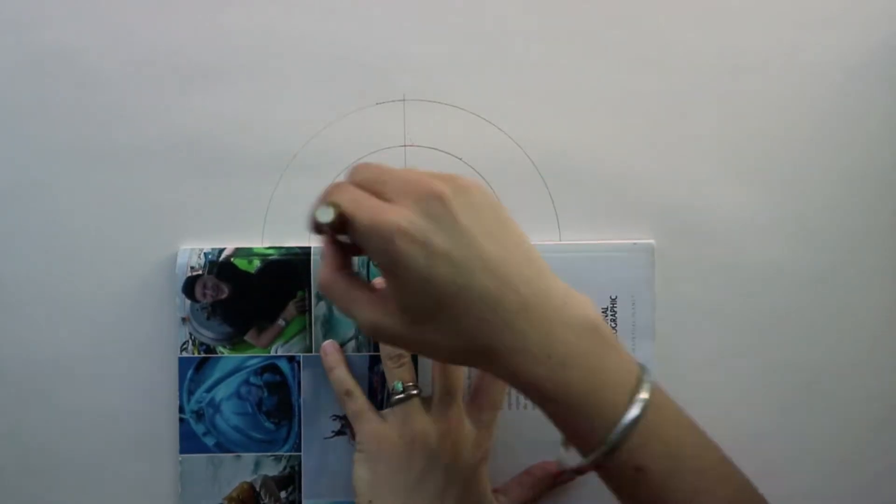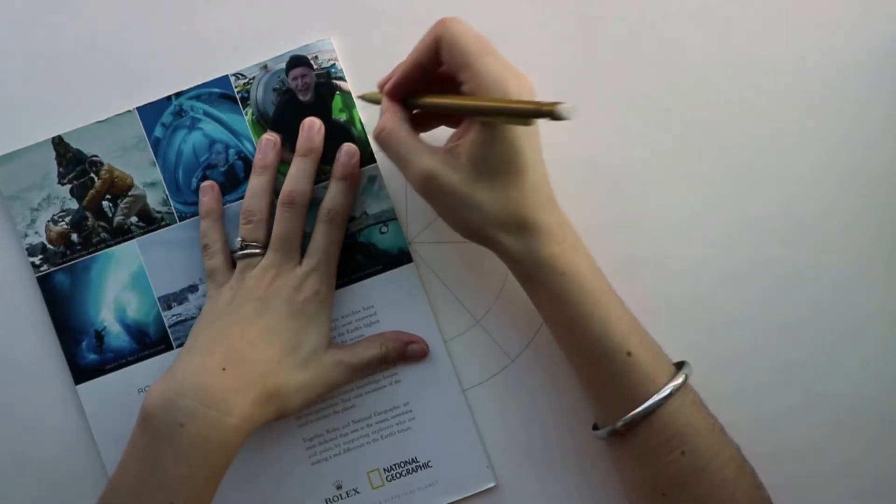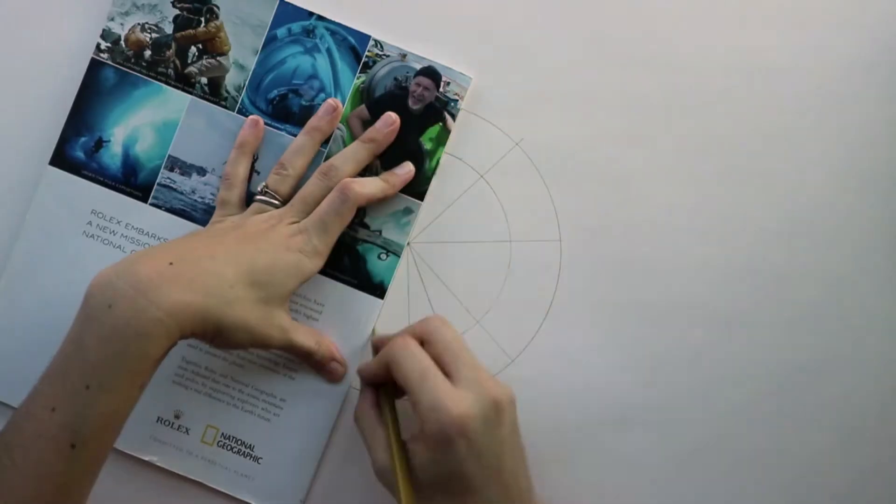Divide the circles in equal parts. It can be in 4, 6, 8, 12, etc. More parts will create more details.